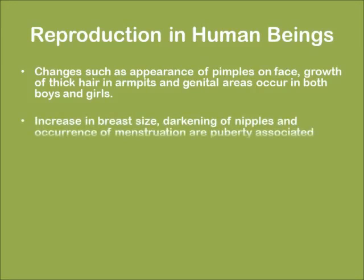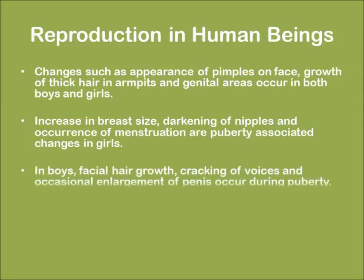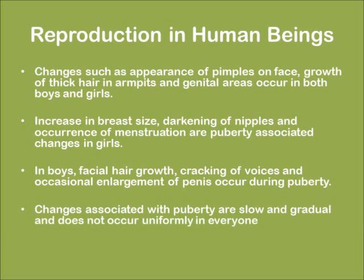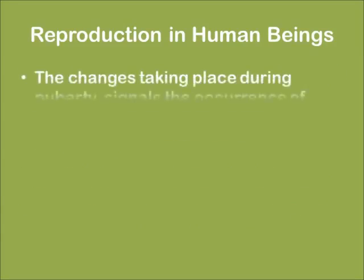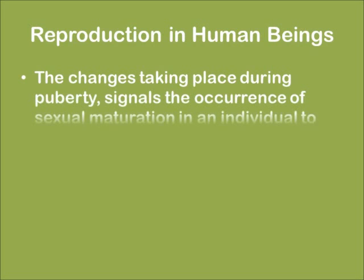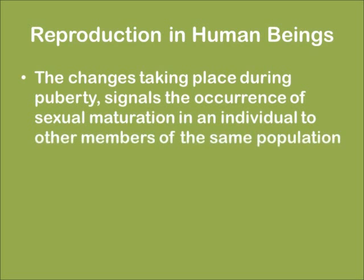Increasing breast size, darkening of the nipples, and occurrence of menstruation are puberty-associated changes in girls. In boys, facial hair growth, cracking of voice, and occasional enlargement of the penis occur during puberty. Changes associated with puberty are slow and gradual and do not occur uniformly in everyone. The changes taking place during puberty signal the occurrence of sexual maturation in an individual to other members of the same population.